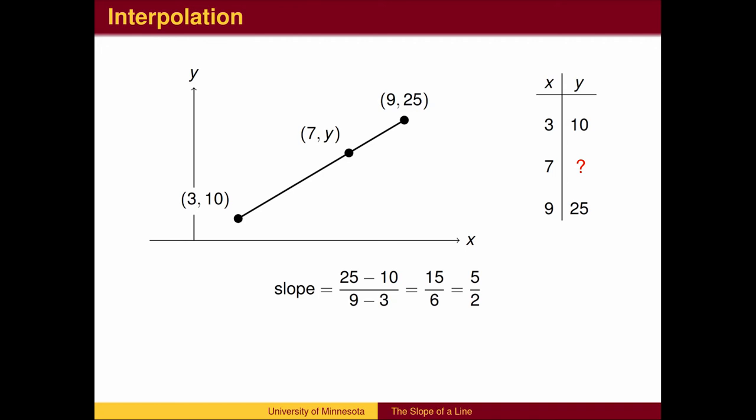Given the slope of a line, we can solve several types of problems. The first is called interpolation, finding a y value corresponding to an x value between two points. First, we use two known points to find the slope. Then, we use the new point with either known point and solve to find the unknown value.